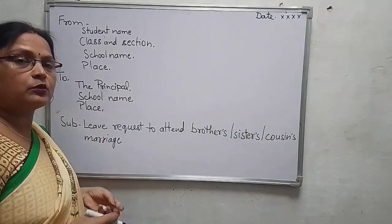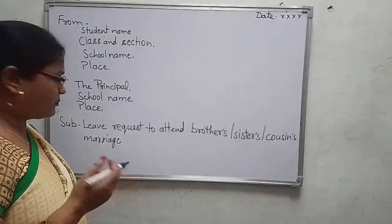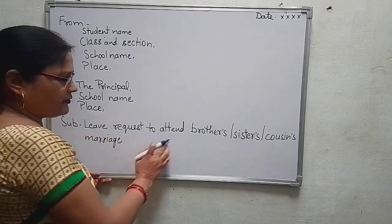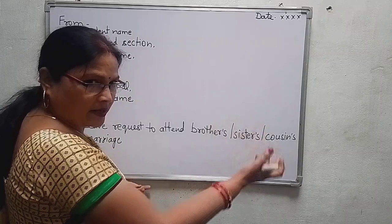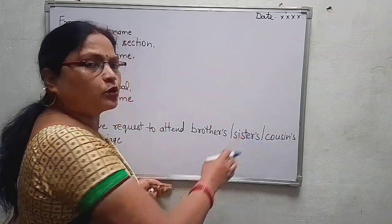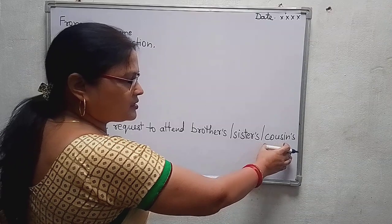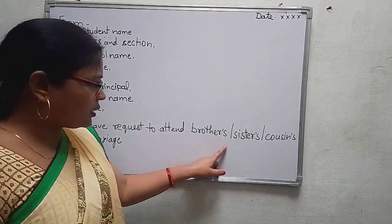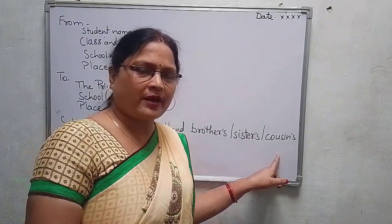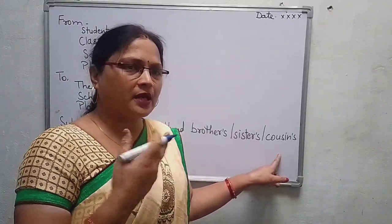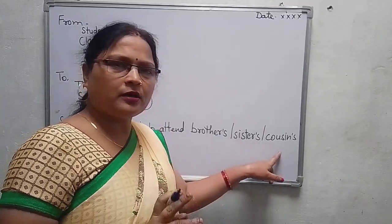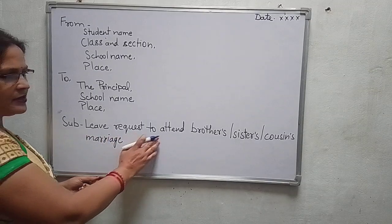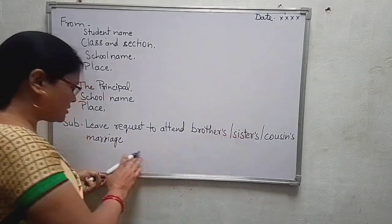The subject line tells which topic we have written about in the letter. So in the subject, write: 'Leave request to attend brother's / sister's / cousin's marriage.' You write whichever relationship applies — if it is a brother's marriage, write brother; if a sister's, write sister; if a cousin's, write cousin's marriage.